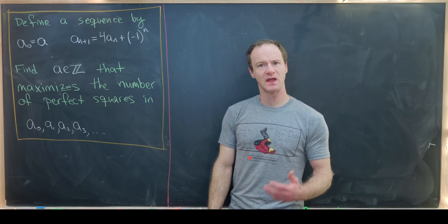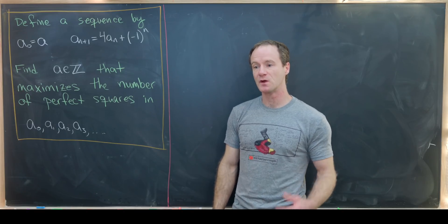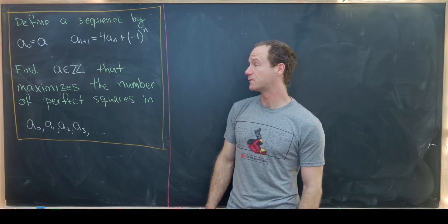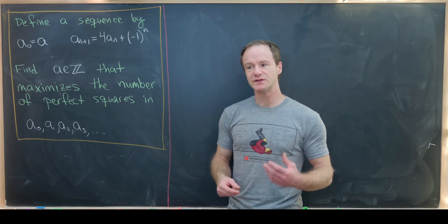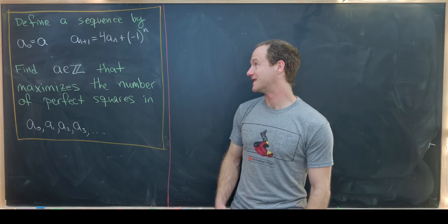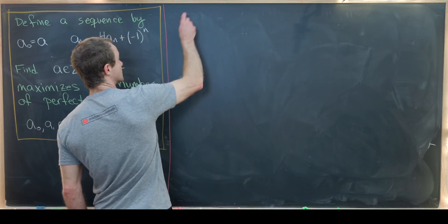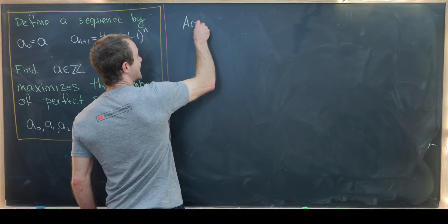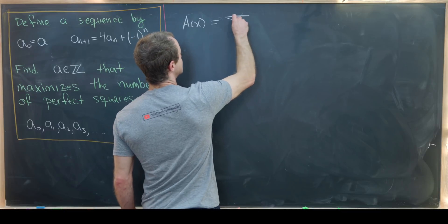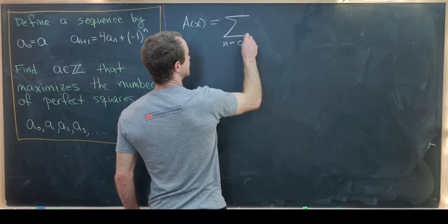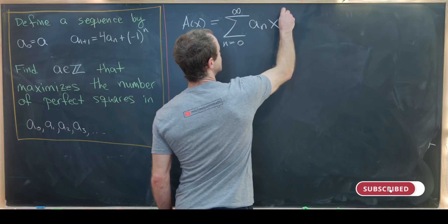Let's get into the solution. We're going to use a couple of favorite tricks here. We'll first find a closed form for this sequence using generating functions, and then we'll use the notion of quadratic residues at the end. So let's see what this generating function will look like. I'm going to define a function A(x) to be the sum as n goes from 0 up to infinity of a_n x^n.